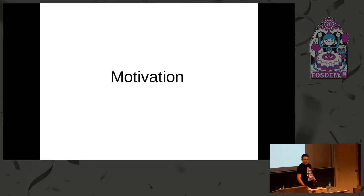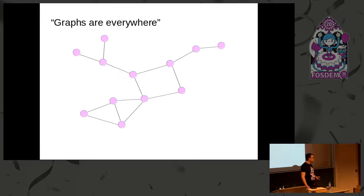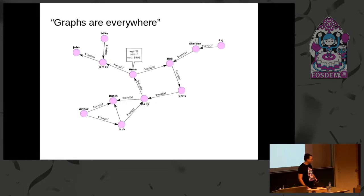I can do the motivation fairly shortly since we are here in the graph dev room. You all know what graphs are, you know that they can be directed, they can be labeled and they can have certain properties on nodes and edges. This is basically known as a property graph model.